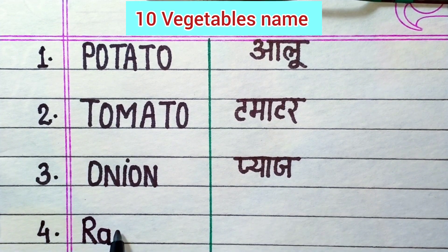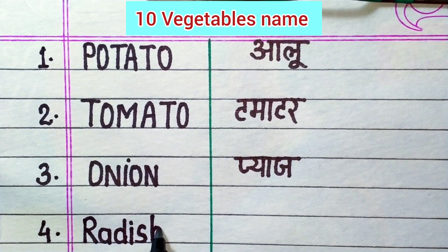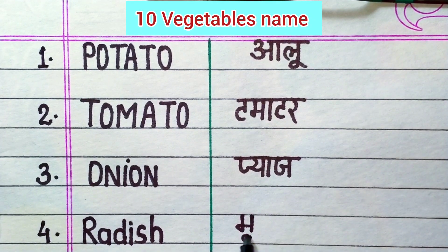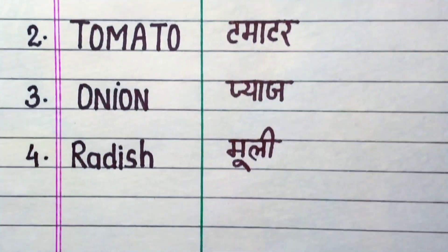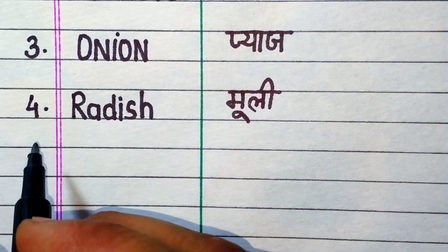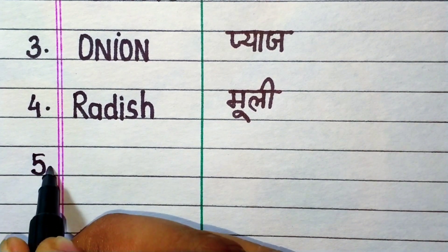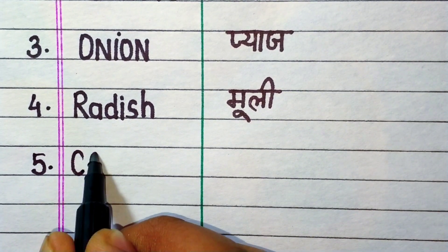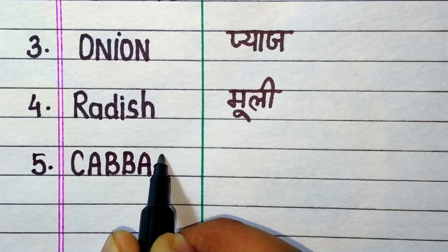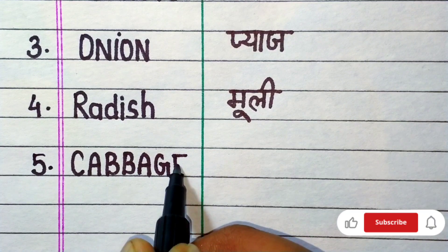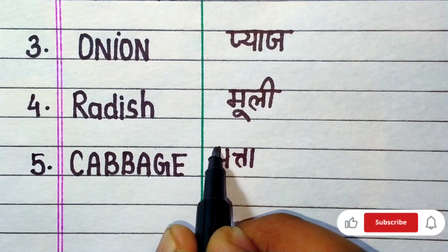R-A-D-I-S-H, radish. Radish means mooli. Next: C-A-B-B-A-G-E, cabbage. Cabbage means pata gobi.